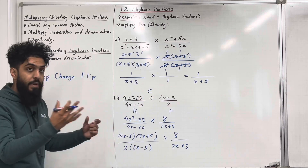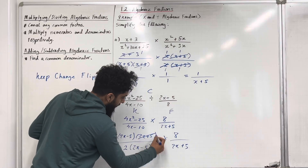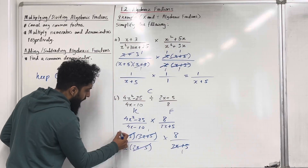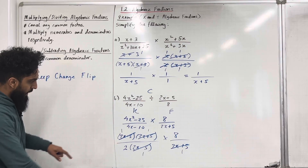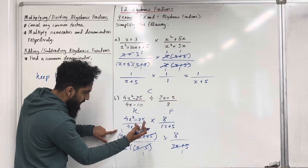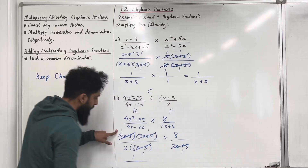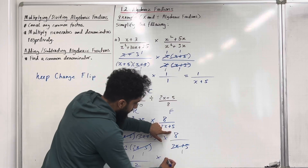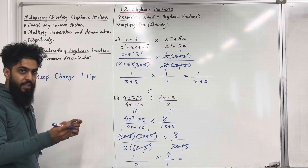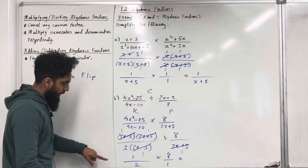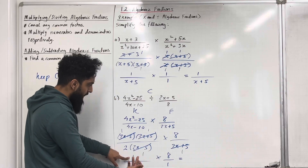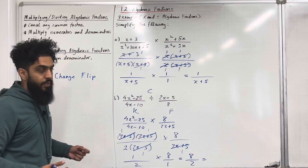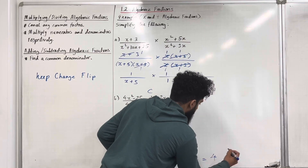Now I've got common factors I can cancel. The 2x plus 5s cancel — stick in 1 here and 1 there. The 2x minus 5s cancel — stick in 1 and 1. The first fraction reduces to 1 over 2, multiplied by 8 over 1. Multiplying the numerators gives 8, and multiplying the denominators gives 2. So 8 divided by 2 is 4, and that is the final answer.